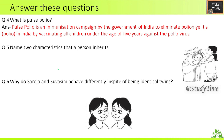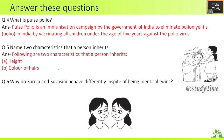Fifth — name two characteristics that a person inherits. The two characteristics may be height and color of eyes. Tall height and skin color are also examples of characters that may be inherited.